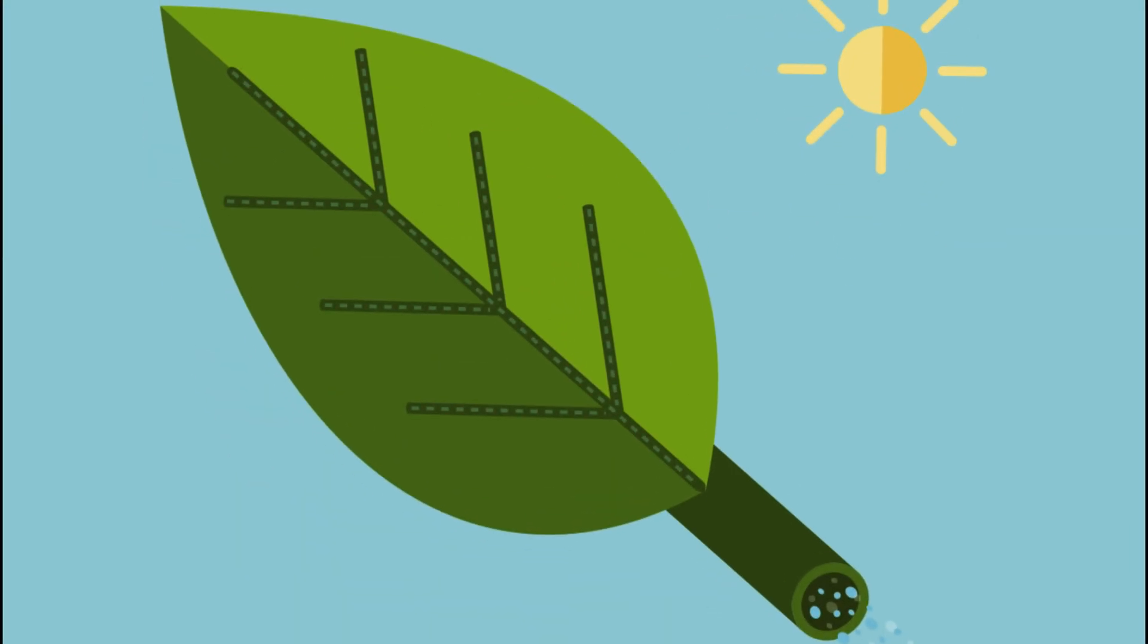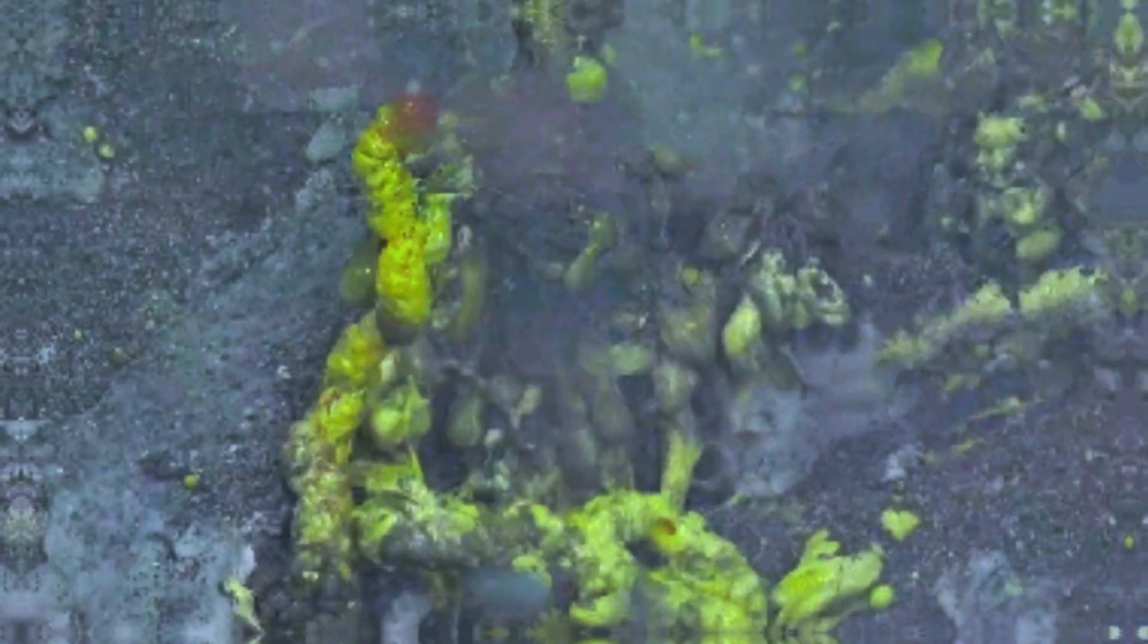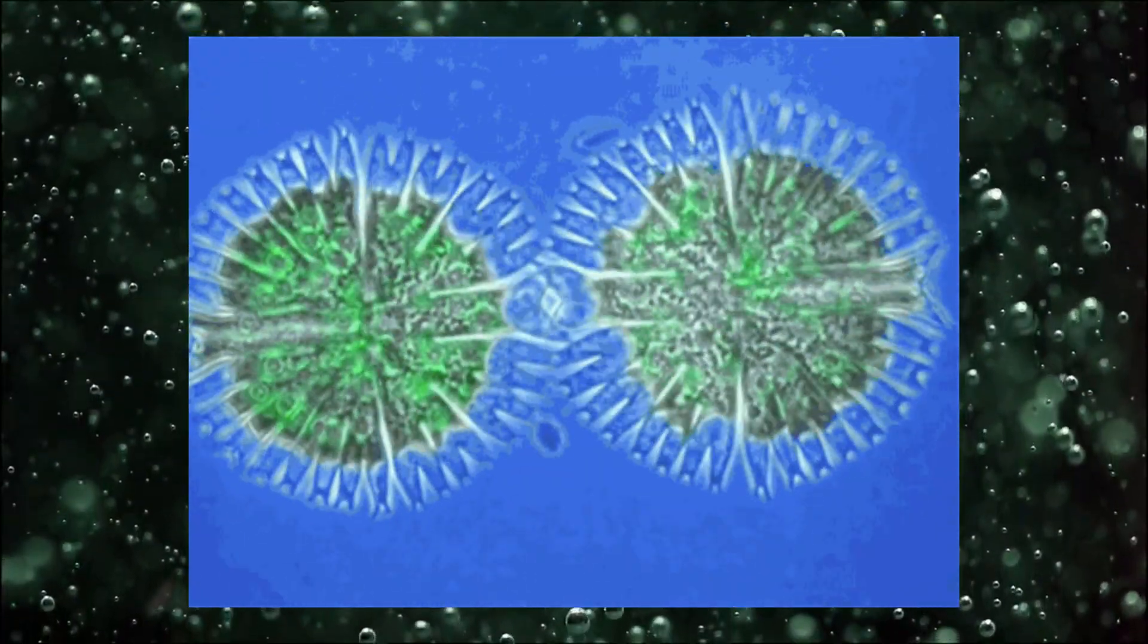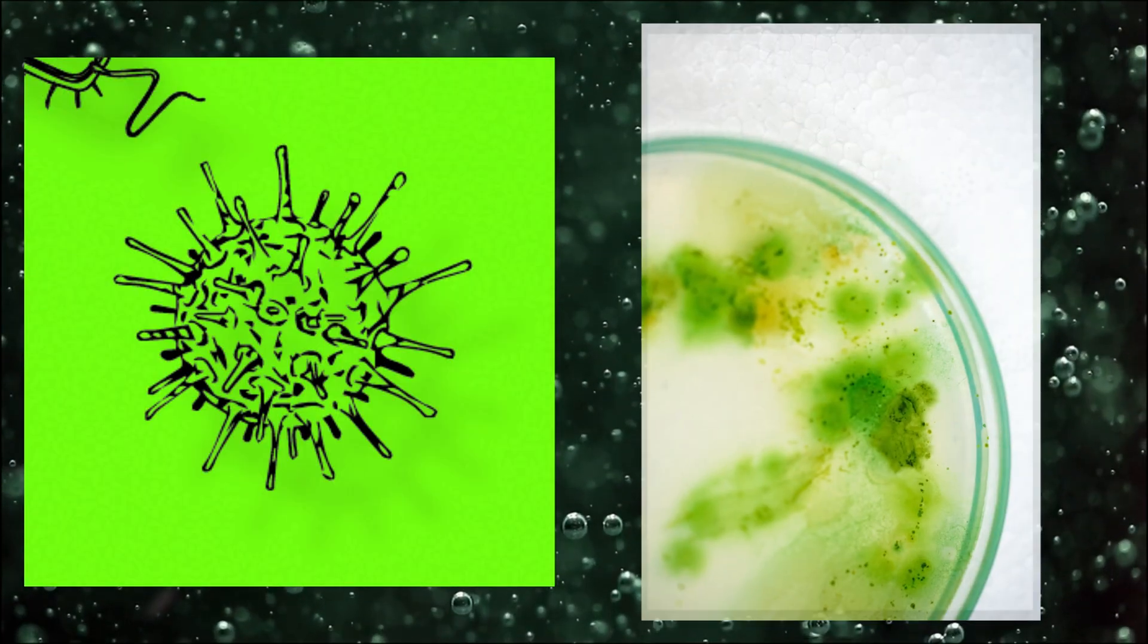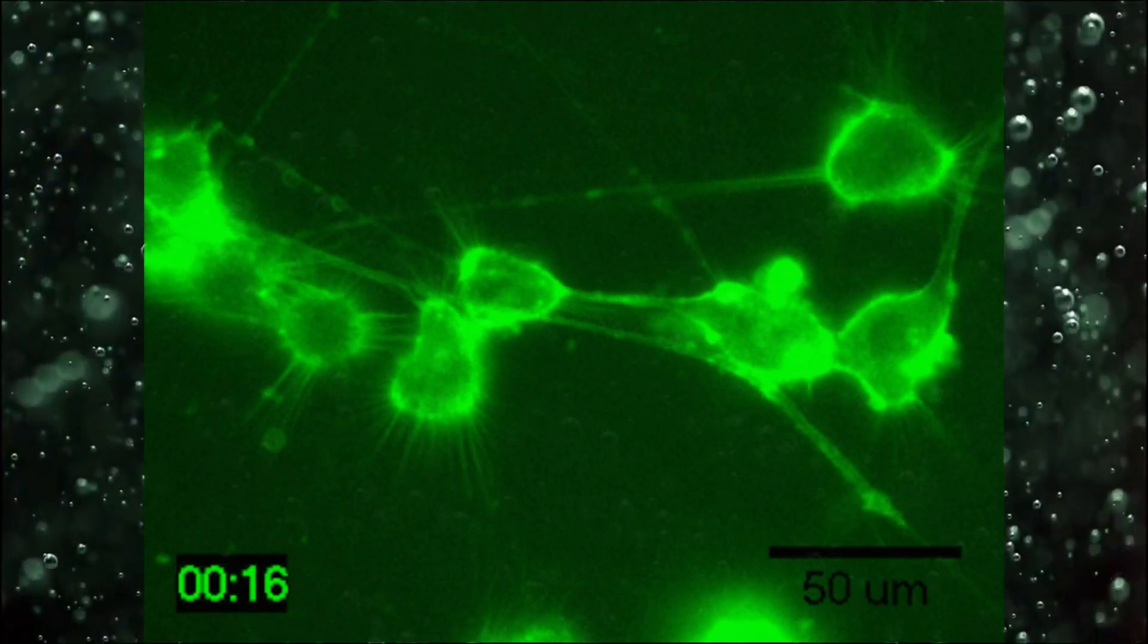In the realm of photosynthesis, green sulfur bacteria demonstrate quantum coherence, where quantum states of light-harvesting complexes within their cells remain in superposition, allowing them to efficiently capture and use light energy for photosynthesis.